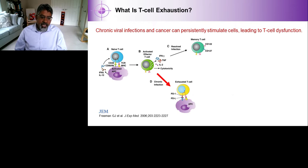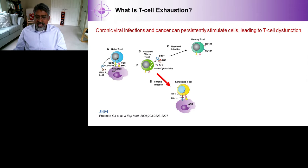So first let's talk about what T-cell exhaustion is. In chronic viral infections and in cancer, any kind of chronic persistent stimulation leads to T-cell dysfunction. A normal immune response starts when an antigen-presenting cell presents antigen and interacts with the naive T-cell, secretes cytokines, and the nexus of this interaction activates the cell. An activated effector cell then does the job of a T-cell during infection, resolves infection, and then a memory T-cell persists in the body.